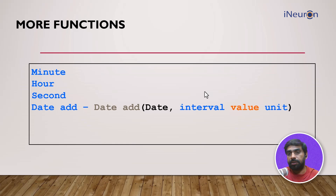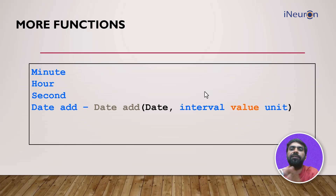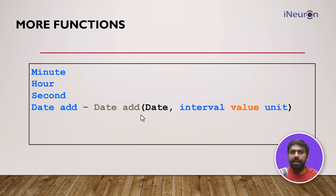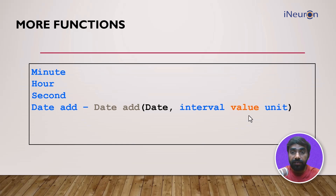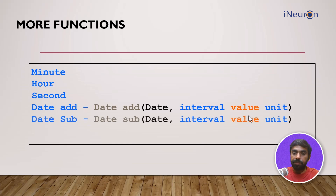You can also add a certain number of days to a date. For example, if you want to add an ideal shipping date from the purchase date — say the shipping should be in the next three days — you can use a function called DATE_ADD. The syntax for DATE_ADD requires you to mention the date, then the interval: you provide the value (how many days to add) and the unit (days, hours, weeks, etc.).